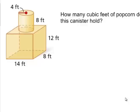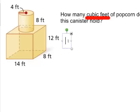These are the notes that go along with volume and surface area of composite figures. Example one: how many cubic feet of popcorn does this canister hold? The first thing to notice is 'cubic feet' — that should be your hint that you're looking for volume. So we're going to find the volume.